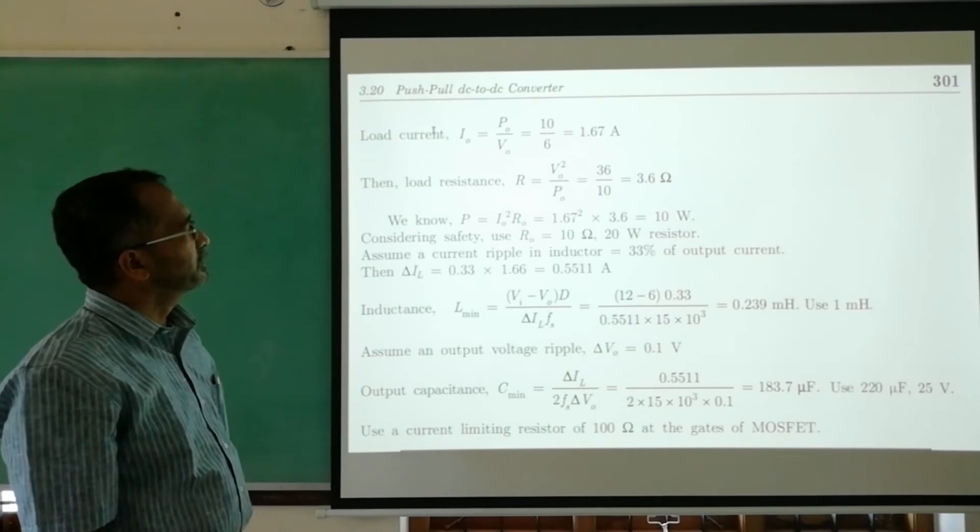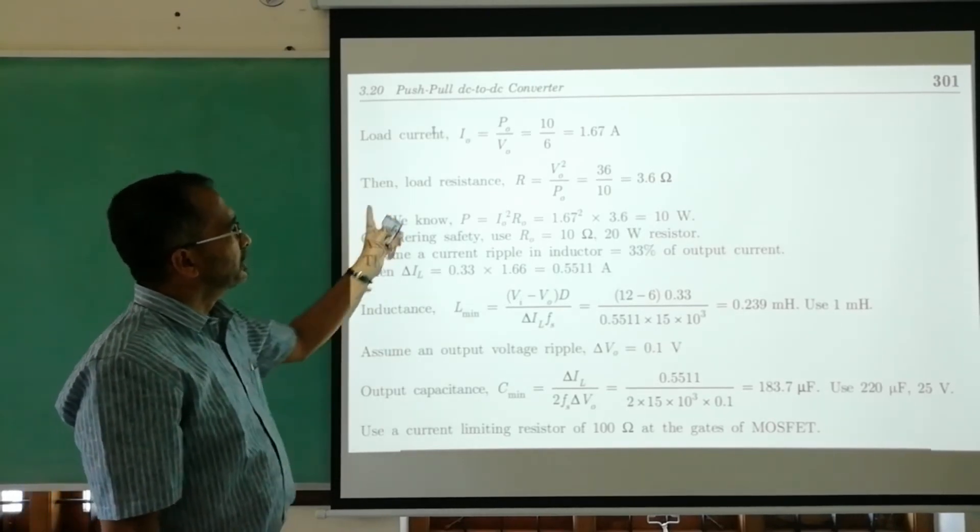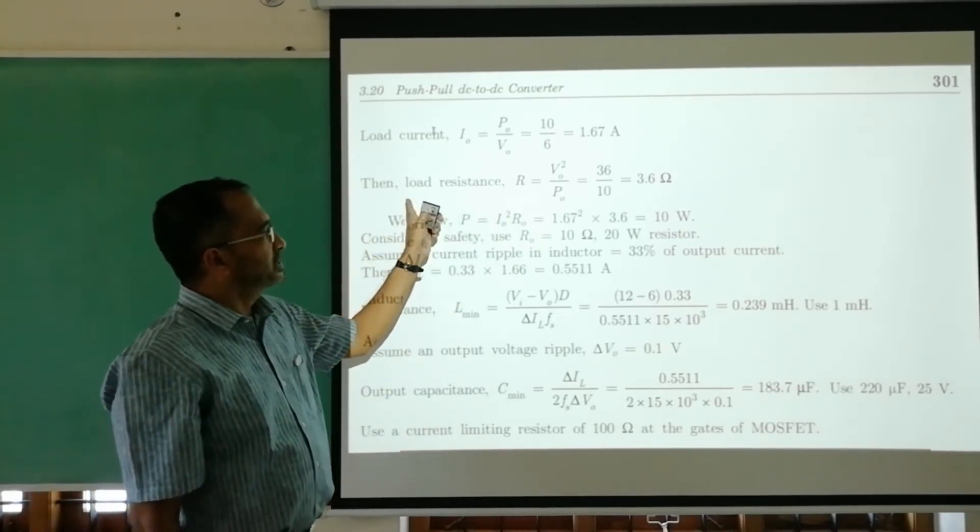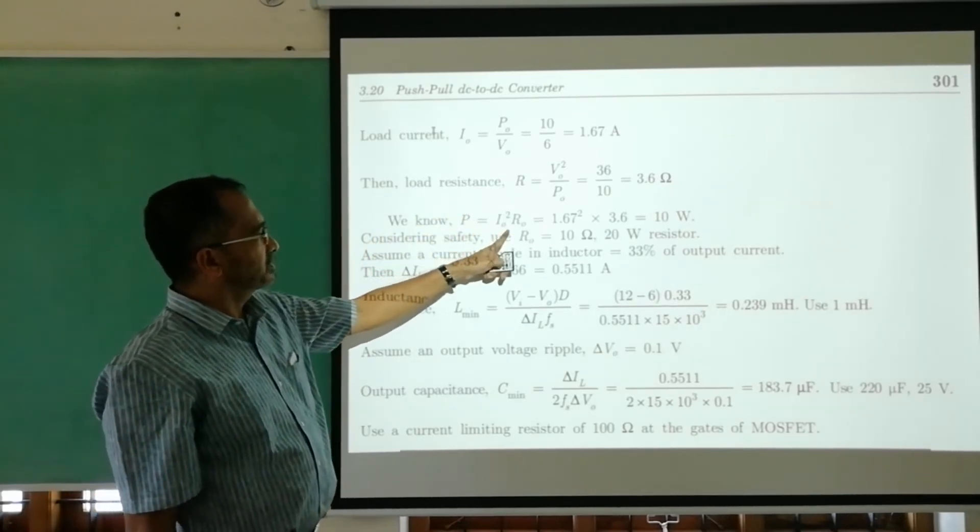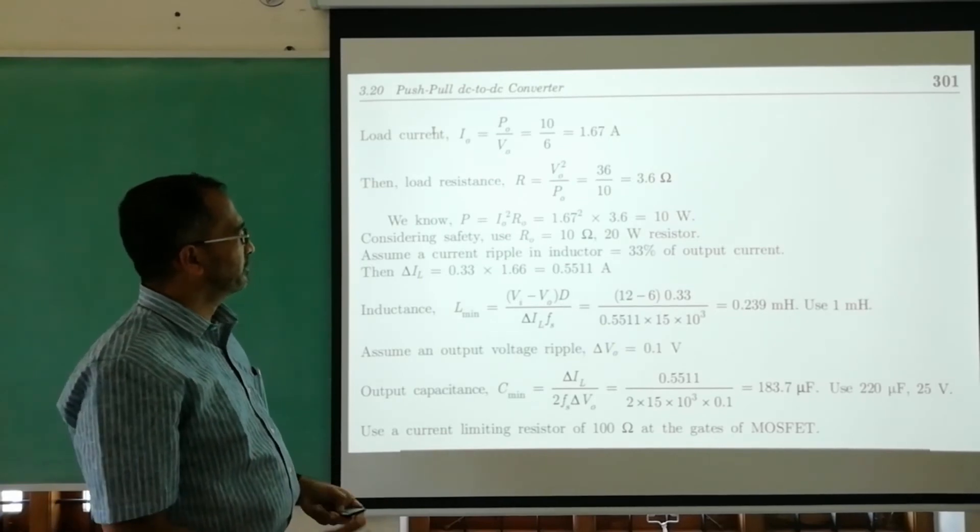I0 is the output current obtained from the ratio of P0 to V0, which is 1.67 amperes. Load resistance is V squared by P, which gives 3.6 ohms. The power rating of the diode is I squared R, about 10 watts.